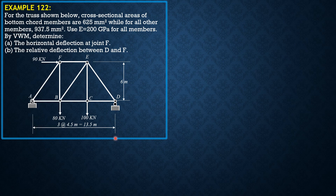We have the dimensions of the truss. The slope of the inclined members would still be 3 horizontal, 4 vertical — 6 divided by 1.5 is 4, and 4.5 divided by 1.5 is 3. So, 3 horizontal, 4 vertical, 5 hypotenuse.